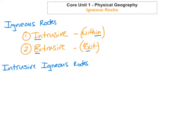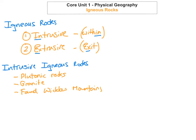Looking at intrusive rocks — they're also known as plutonic rocks. An example of an intrusive igneous rock is granite, which can be found in the Wicklow Mountains. These rocks form when molten magma cools deep within the Earth's crust. The cooling is really slow because there's no contact with air and very little contact with water. Because it's slow, the crystals are very large, as there's lots of time for them to form.